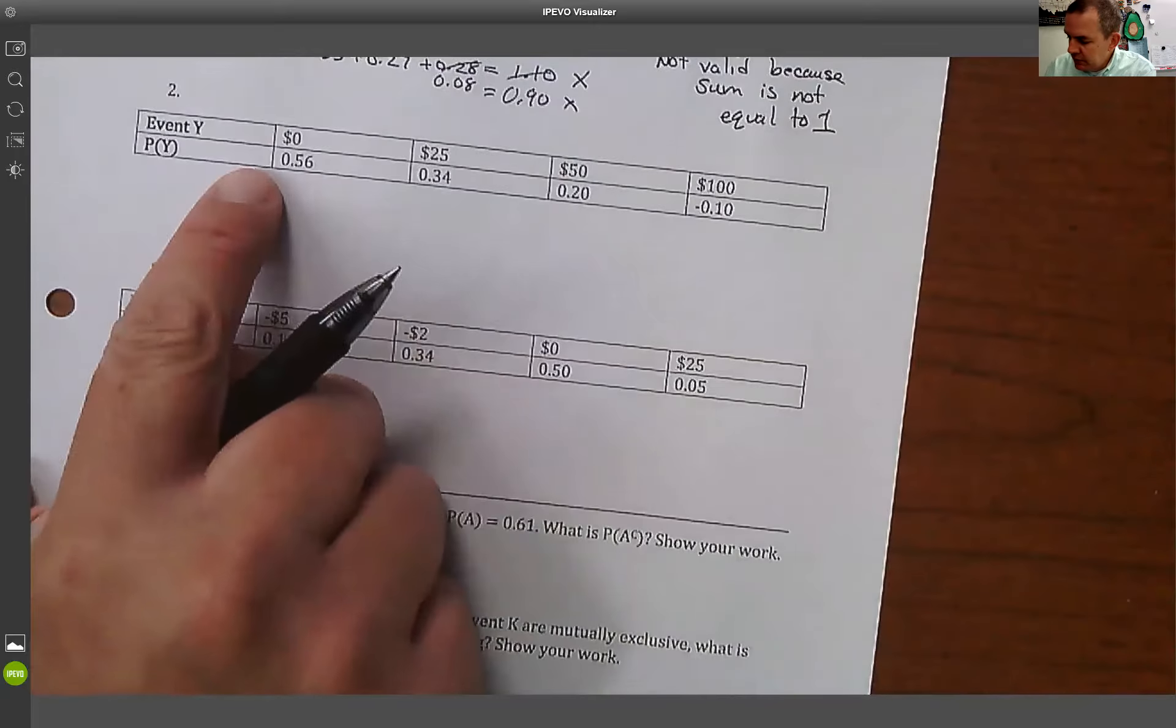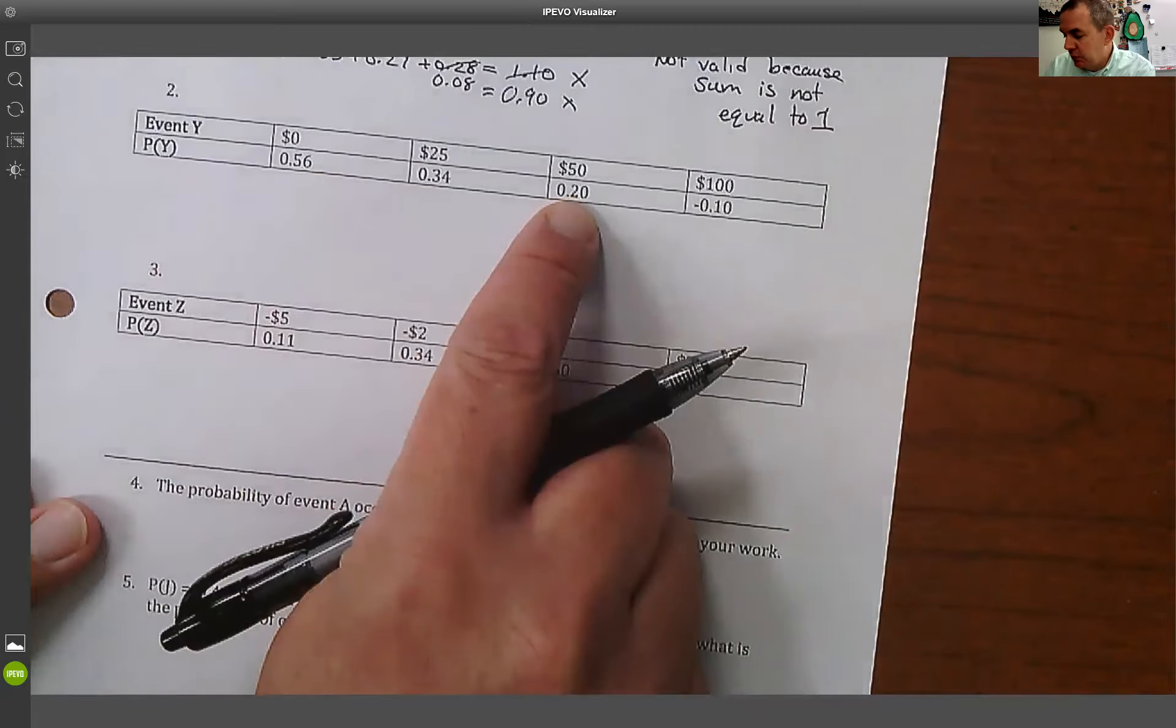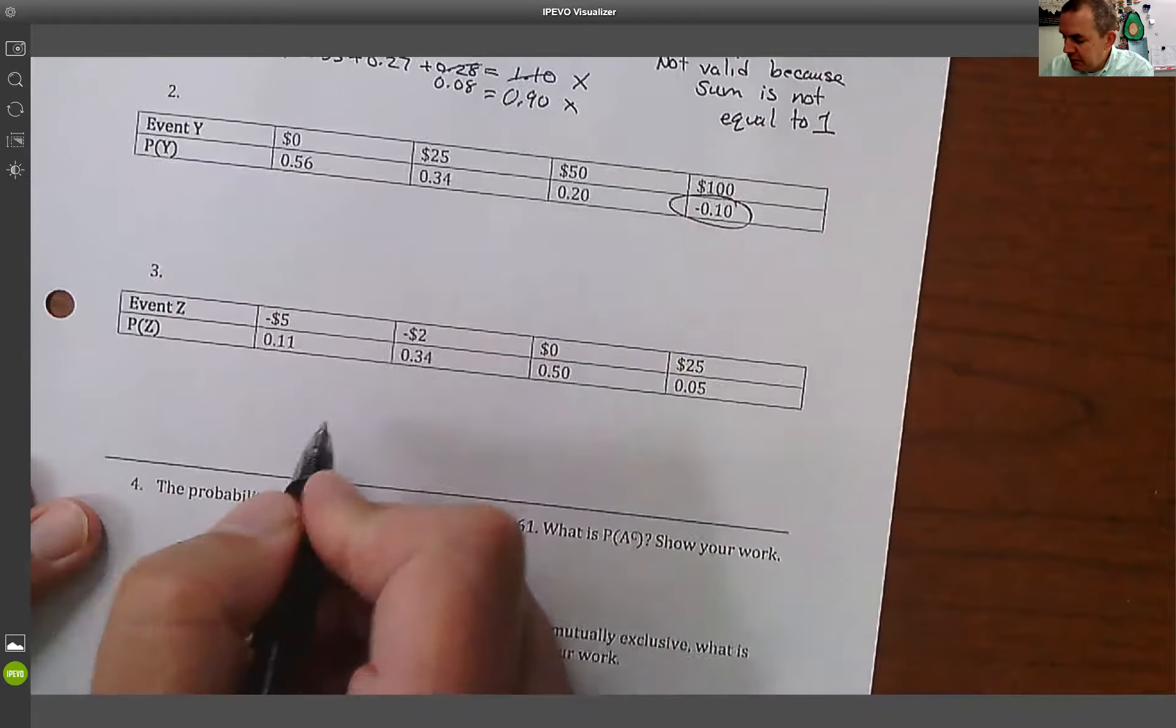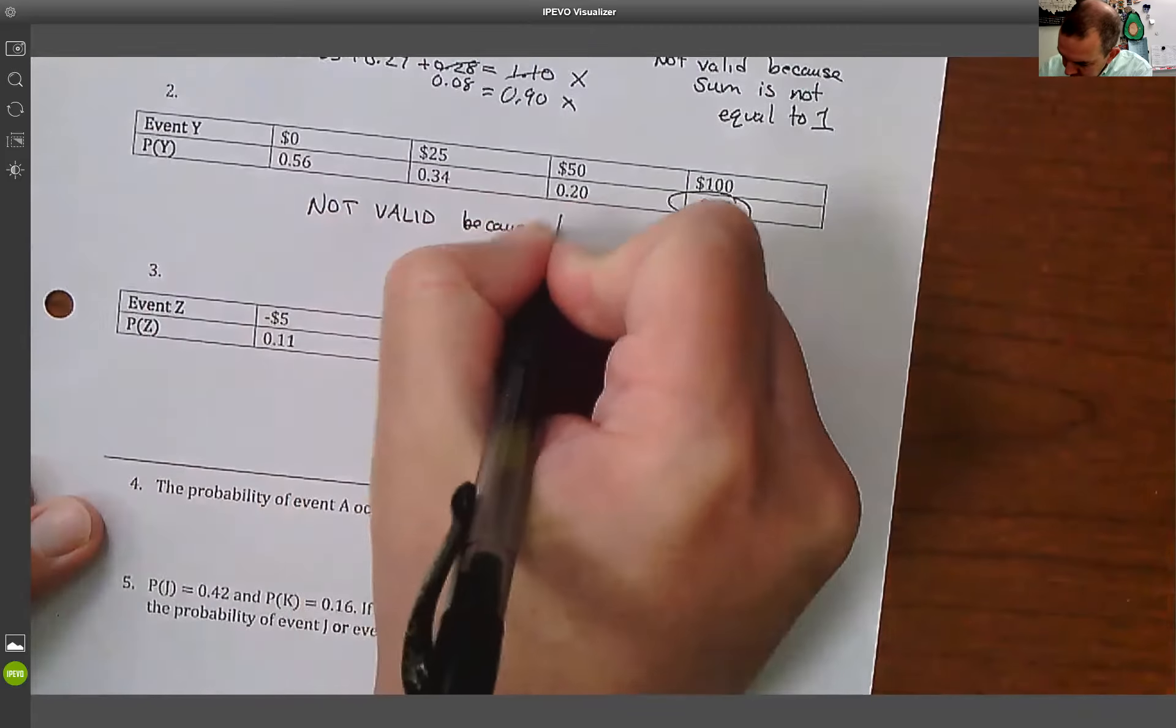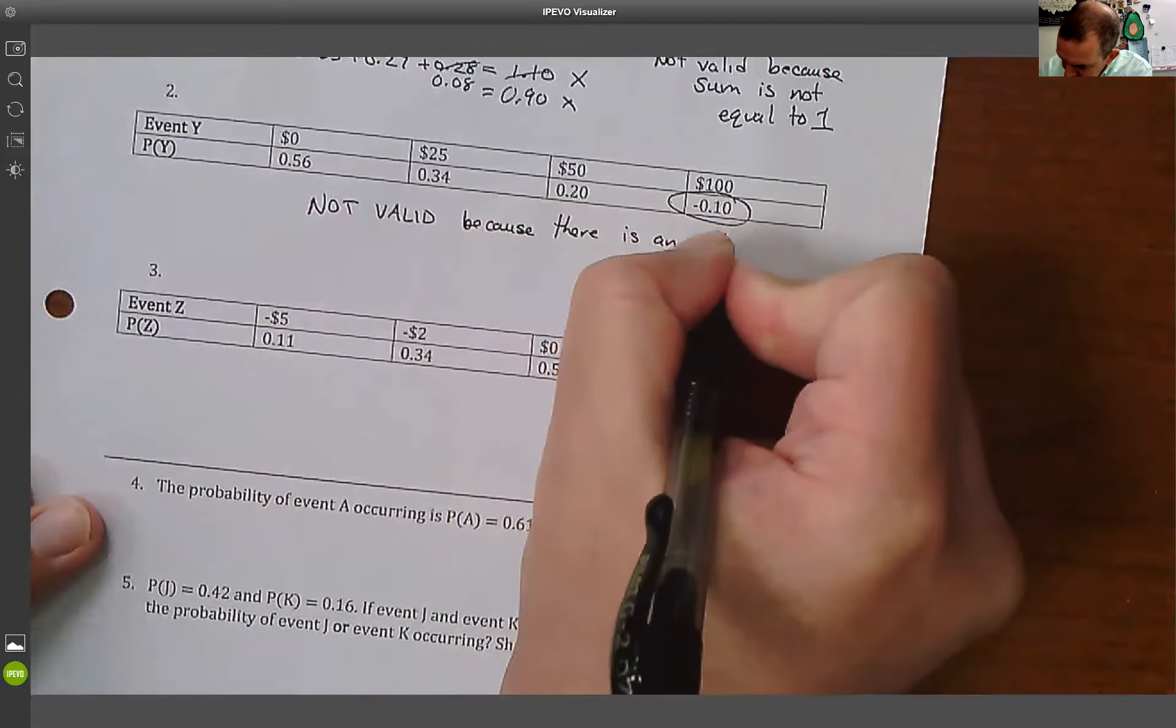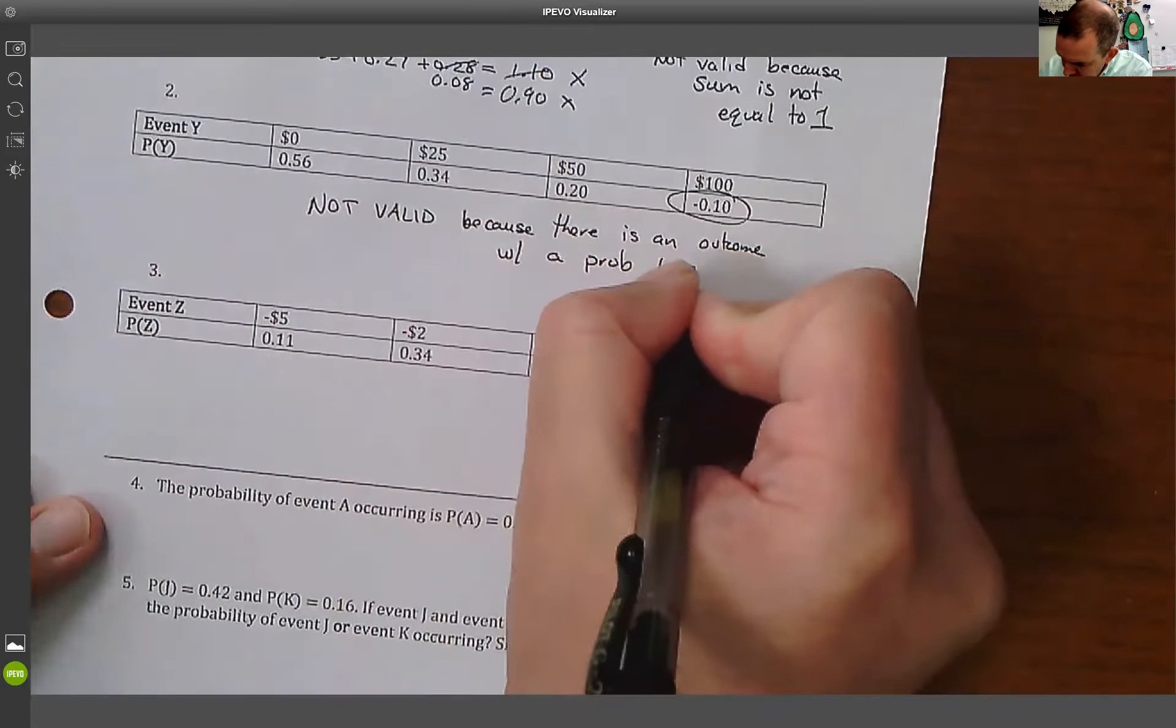So for the next one, we go through and look. So 56 and 34 gives me 90, plus 2 gives me 1.1, minus 0.1 gives me 1. It does equal 1, but since there's a negative probability, this is not valid because there is an outcome with a probability less than 0.